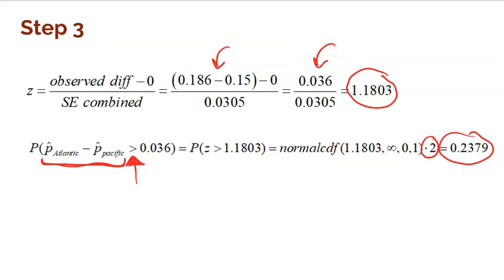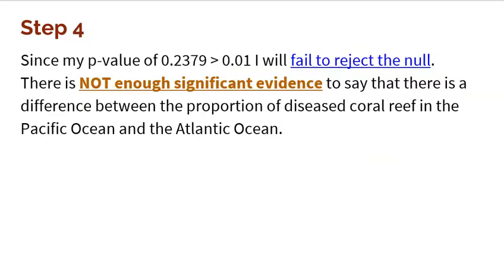Take a moment to soak that in. The probability of seeing my sample or more extreme, assuming the null is true, is actually pretty likely — meaning it's not a weird sample. My conclusion: since my p-value of 0.2379 is greater than my alpha of 0.01, I fail to reject the null. There is not enough significant evidence to say that there is a difference between the proportion of diseased coral reef in the Pacific Ocean and the Atlantic Ocean. Make sure you compare your p-value to your alpha level, state whether you reject or fail to reject, and give a nice contextual answer.